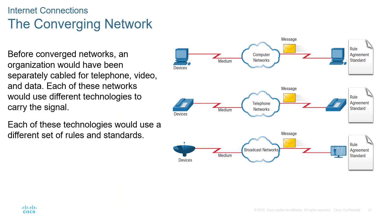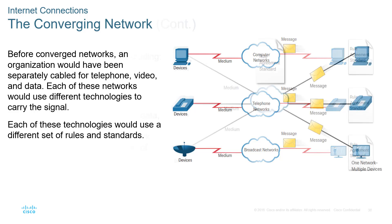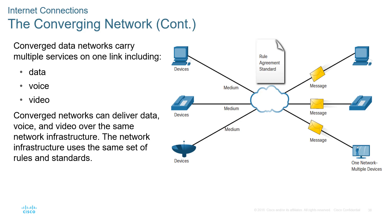Network convergence is a very important concept. We used to need one network for each type of major data — one for voice, one for broadcast TV, one for computer data and email. Now we have a converged network: one underlying technology, typically Ethernet, off of which everything can connect following the same rules and agreements. This means less cabling, less infrastructure, and less overall cost.